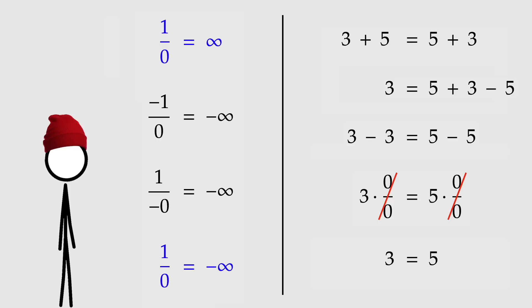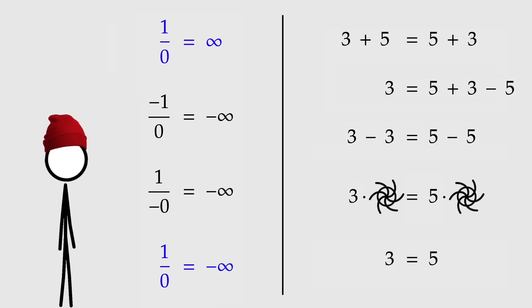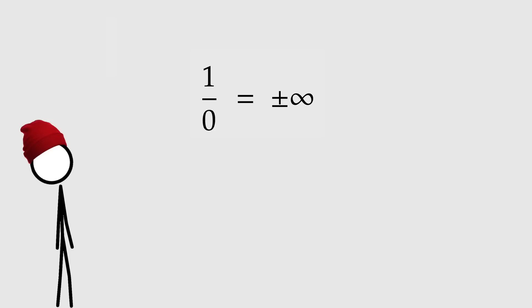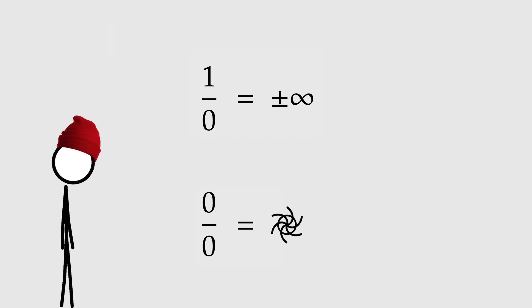So in a sense, the real problem with one over zero is he just can't decide whether he wants to be positive or negative infinity. It's like he's having an identity crisis. But zero over zero is an entirely different beast. Zero over zero just straight up breaks equality entirely. I like to think of him as a black hole. If you get anywhere near zero over zero, he will suck you up and annihilate you into a thousand little pieces.